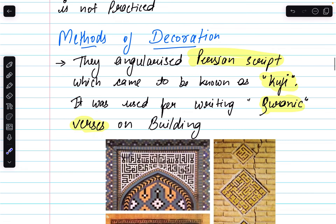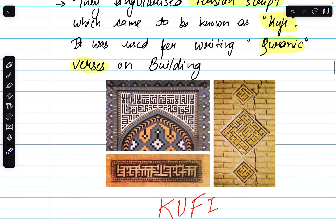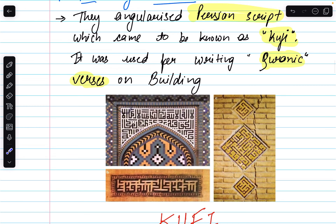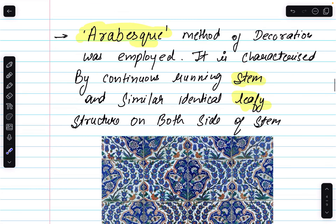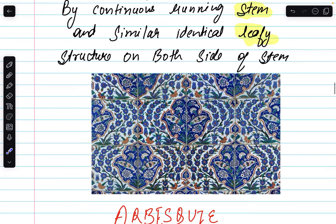The method of decoration included, first, the angularized Persian script which came to be known as Kufi. Kufi was used for writing Quranic verses on buildings. You must know that the use of Kufi begins with Indo-Islamic architecture, and it is basically Quranic verses written on buildings. The second method of decoration is Arabesque. In Arabesque, the method employed is characterized by a continuous running stem with similar, identical leafy structures on both sides of the stem.